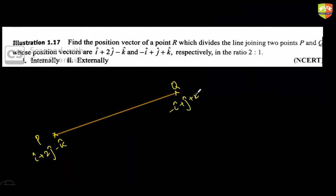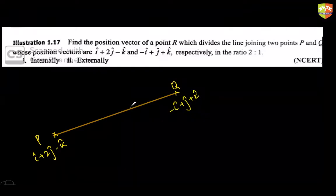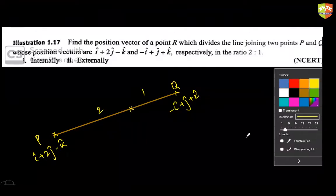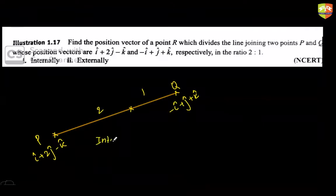Q has position vector -i + j + k. The division ratio is 2:1 internally. I'll write down the formula for internal division.